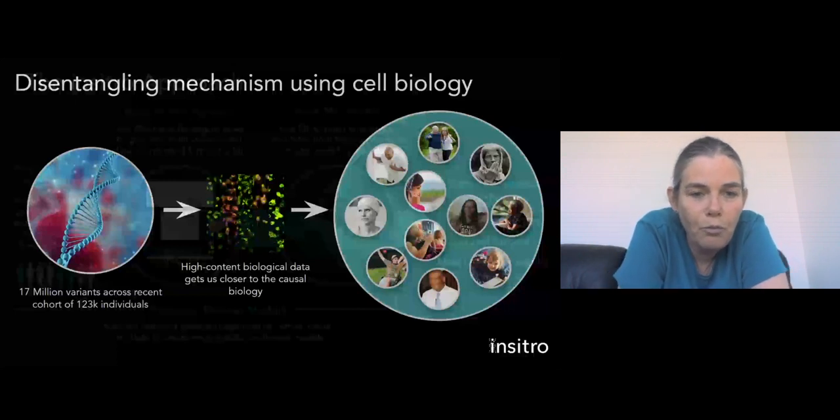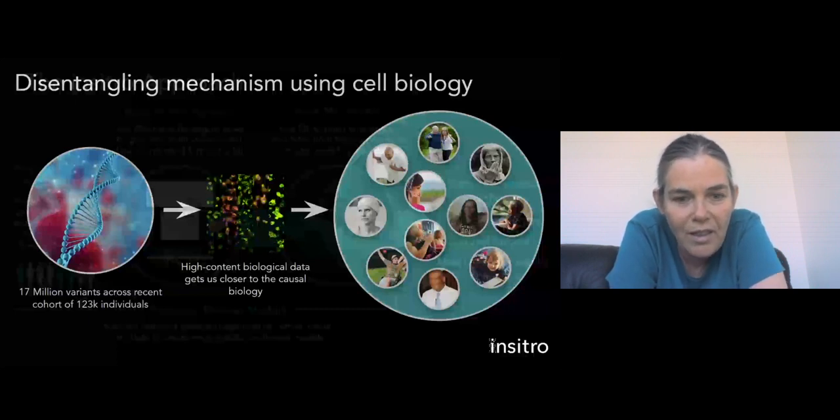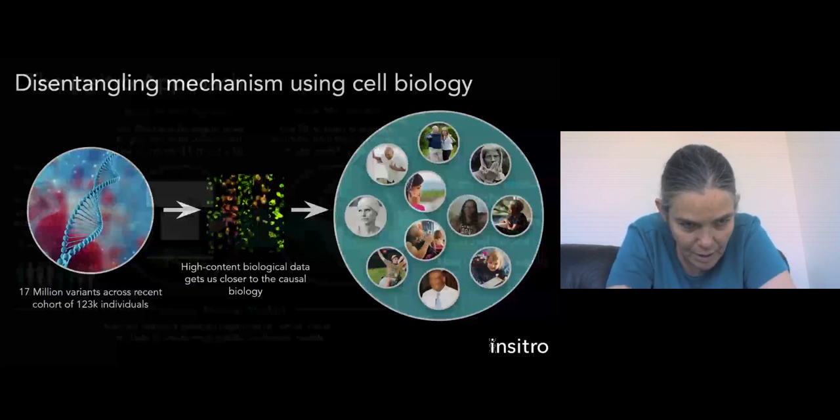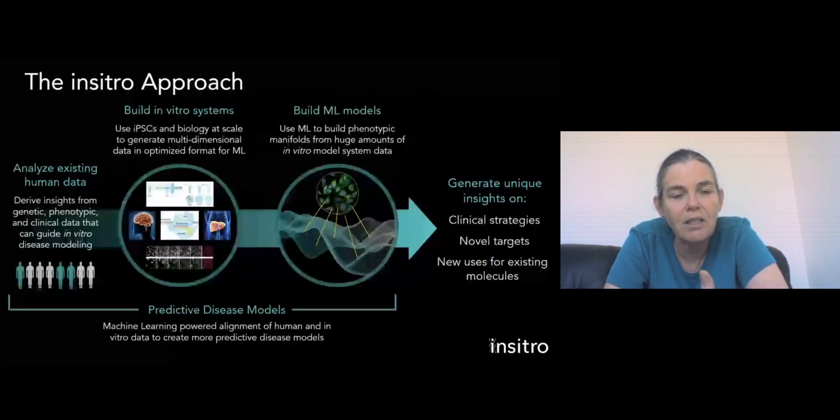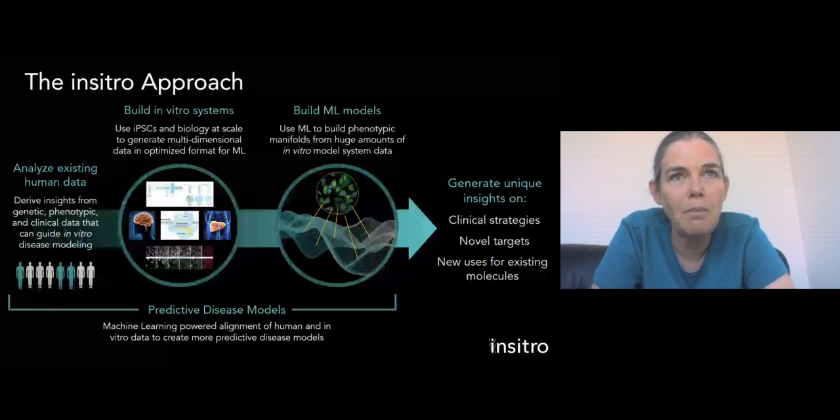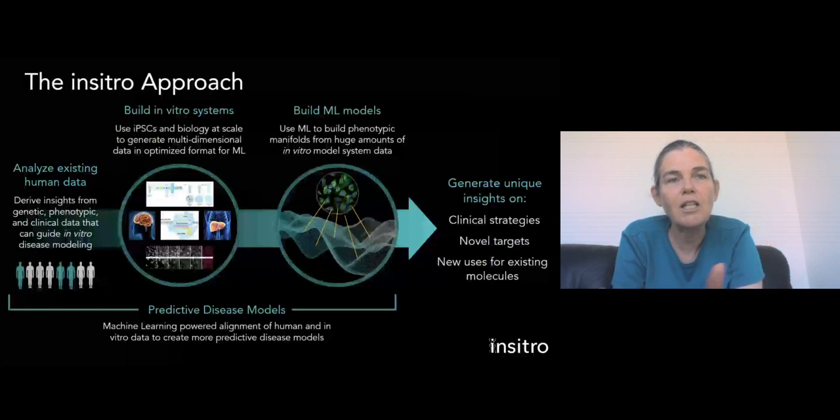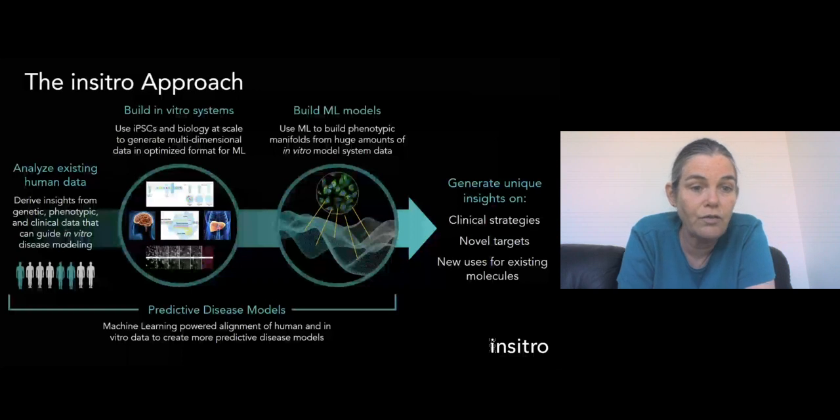So in order to do that, we've put together the following approach that really helps us use genetics but in a different way than what people typically have. So what we do is we begin with using human data in order to derive insights about the genetics that give us a better understanding of the genetic architecture of disease. So this is a combination of machine learning together with statistical genetics, and it gives us a genetic architecture that can often involve dozens if not hundreds of genes that are implicated.